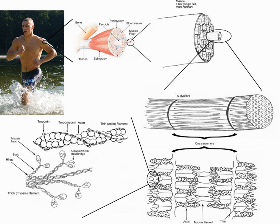Muscle is a soft tissue found in most animals. Muscle cells contain protein filaments of actin and myosin that slide past one another, producing a contraction that changes both the length and the shape of the cell. Muscles function to produce force and motion. They are primarily responsible for maintaining and changing posture, locomotion, as well as movement of internal organs, such as the contraction of the heart and the movement of food through the digestive system via peristalsis.